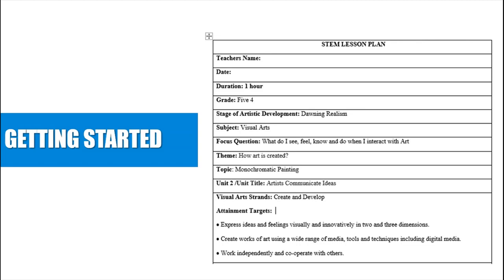The information you will provide includes teacher's name, date, duration, grade, stage of artistic development, subject, and topic. Everything else is extracted directly from the curriculum, and these include focus question, theme, unit, visual arts strands, and attainment targets. This part is fairly easy and simple.